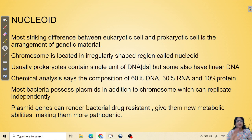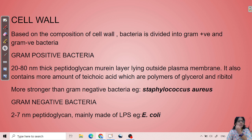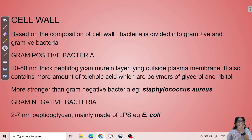The cell wall is a very important and complex structure in bacterial cells. It is mainly made of peptidoglycan and lipopolysaccharides. Gram positive bacteria have a peptidoglycan layer of 20 to 80 nm thickness, making them stronger. Gram negative bacteria have a lower peptidoglycan concentration of only 2 to 7 nm and are mainly composed of lipopolysaccharides. E. coli is an example of a gram negative bacterium.